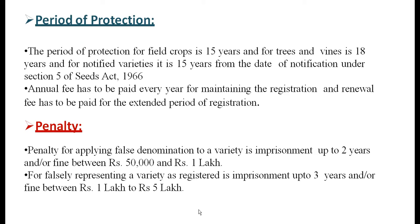Regarding the period of protection: for field crops it is 15 years, and for trees and vines it is 18 years. For notified varieties it is 15 years from the date of notification under Section 5 of the Seeds Act 1966. An annual fee must be paid every year for maintaining registrations, and a renewal fee must be paid for the extended period of registration. The penalty for applying a false denomination to a variety is imprisonment up to 2 years and/or a fine between ₹50,000 to ₹1 lakh.